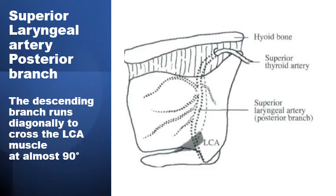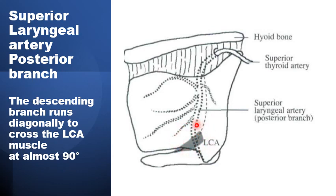The third structure is an artery — the descending branch of the posterior branches of the superior laryngeal artery. The superior laryngeal artery is itself a branch of the superior thyroid artery after it perforates the thyrohyoid membrane, giving anterior and posterior branches. One posterior branch is a descending branch that crosses the outer surface of the lateral cricoarytenoid, coming into the operative field. It is important to identify and protect this branch to avoid troublesome bleeding that can be difficult to control through a tiny window.